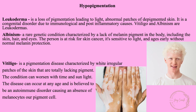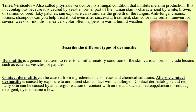Vitiligo is a pigmentation disease characterized by white, irregular patches of the skin that are totally lacking pigment. The condition can worsen with time and sunlight, can occur at any age, and is believed to be an autoimmune disorder causing absence of melanocytes. Tinea versicolor, also called pityriasis versicolor, is a fungal condition that inhibits melanin production. It is not contagious, being caused by yeast — a normal part of human skin — and is characterized by white, brown, or salmon-colored flaky patches. Antifungal creams, lotions, and shampoos can help treat it, though skin color may remain uneven for weeks or months. It often occurs in warm, humid weather.